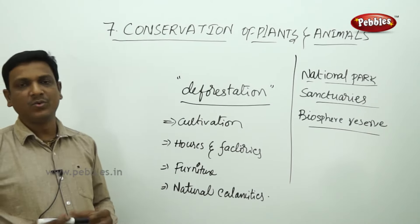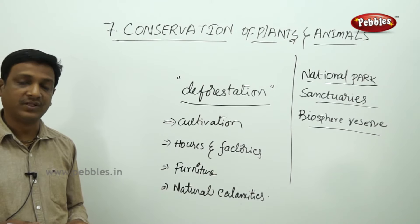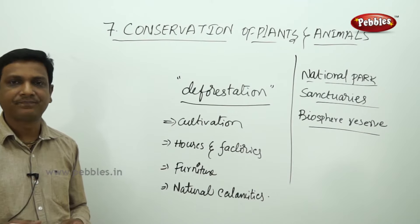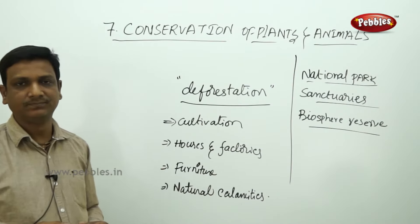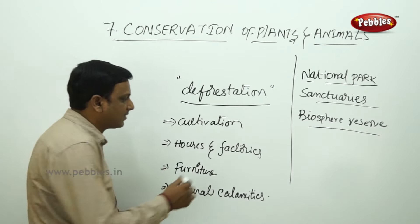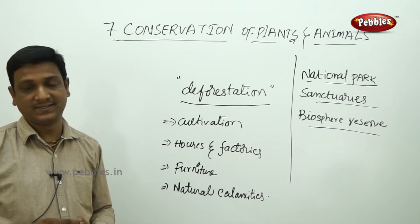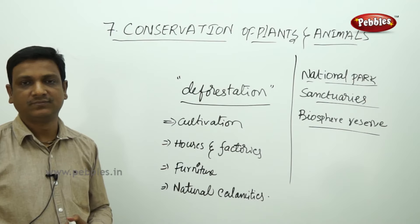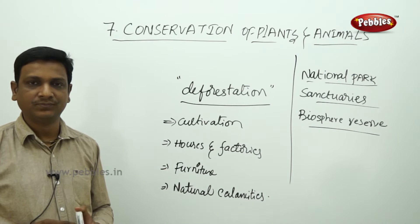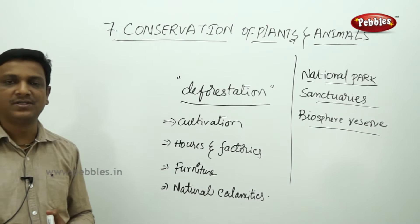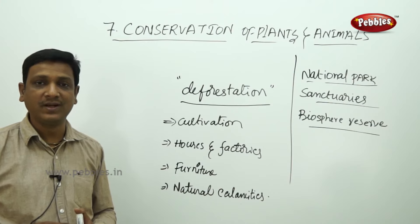Let us see the reasons for deforestation. We need more land — the population is growing and the demand for food grains is increasing. So forest land is cleared for cultivation and agriculture. Second, for building houses, factories, and industries, forest land is cleared. Also, to build reservoirs for irrigation purposes, many forest lands are cleared.